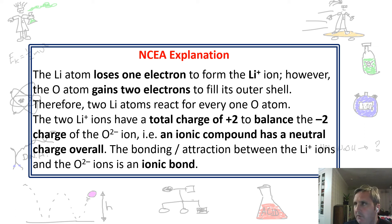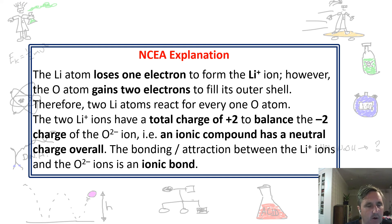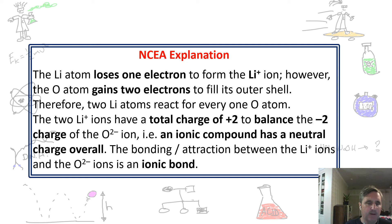To write this carefully: a lithium atom loses one electron to form the lithium ion. The oxygen atom gains two electrons to fill its outer shell. Therefore, two lithium atoms react for every one oxygen atom. The two lithium ions have a total charge of plus two, which balances the negative two charge of the oxide ion, so the compound has a neutral overall charge. The bonding attraction between the lithium ions and the oxide ions is called an ionic bond.